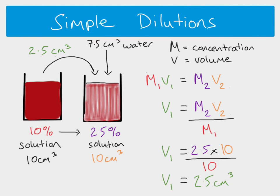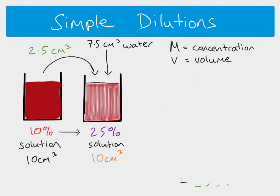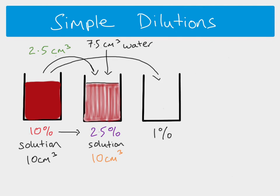An important point: when making another dilution in a simple dilution scheme, you do not take from the previously made dilution. In a simple dilution, you always remove from the original stock solution. So if we want to make another dilution at 1%, we take a certain volume directly from our original 10% stock solution — not from the 2.5% solution we just made. Taking from one dilution to the next is what you do in a serial dilution.